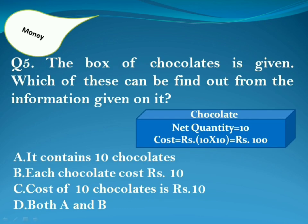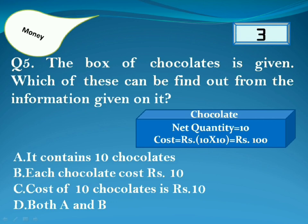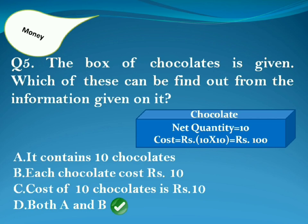A box of chocolates is given. Which of these can be found out from the information given on it? Answer is Option D. Because net quantity is 10, so Option A is true. The cost written on the box is 10, so Option B is correct. But the cost of 10 chocolates is not 10 rupees — it is 100 rupees. So Option C is false.